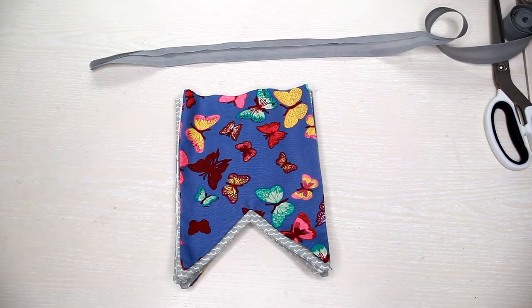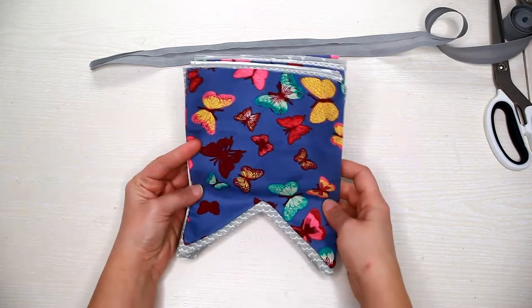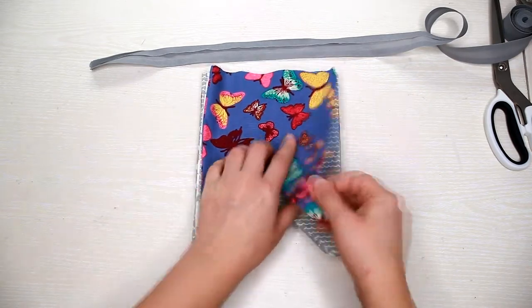This is how the flags look like after being turned inside out. You just need to flatten the seam using an iron and make a seam close to the edge.